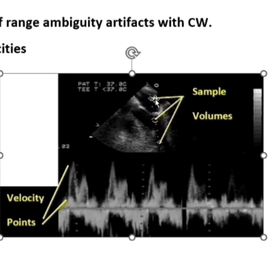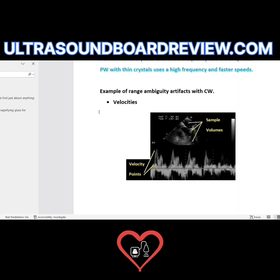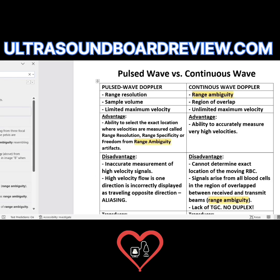You're getting velocities from all the different areas of your continuous wave Doppler, but you don't get that with pulse wave Doppler. So you get freedom from range ambiguity artifacts.